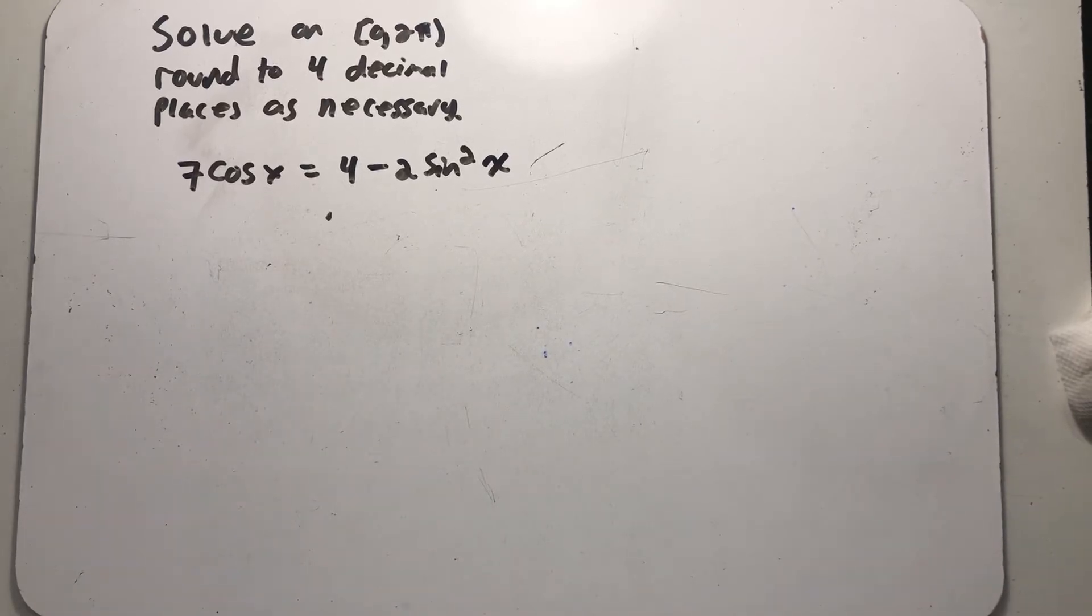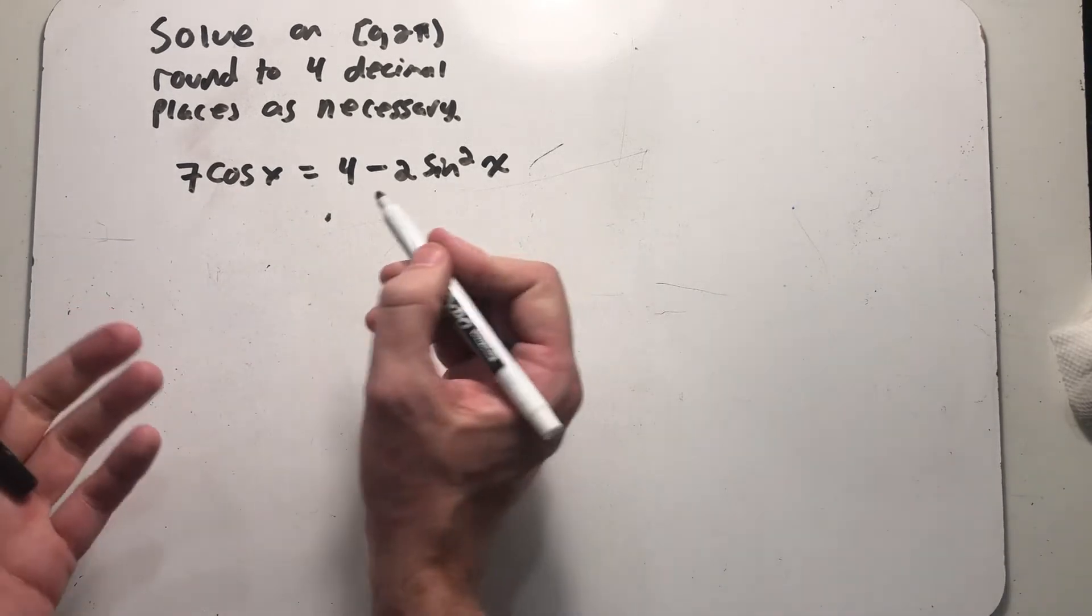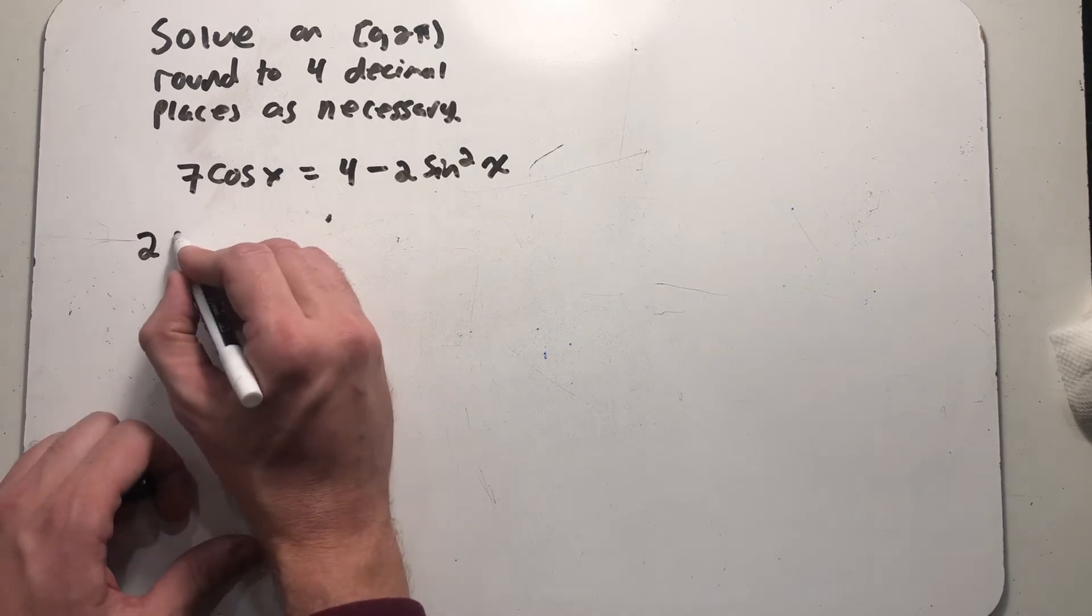We've been asked to solve this equation on the interval from 0 to 2π and then to round to four decimal places as necessary. So I guess we're going to see what those instructions are about, maybe having to round. It tells me I might be using my TI-84 to approximate some solutions at some point, but for right now I see a trigonometric equation that has quadratics in it and I would kind of like to get everything on one side before I get started.